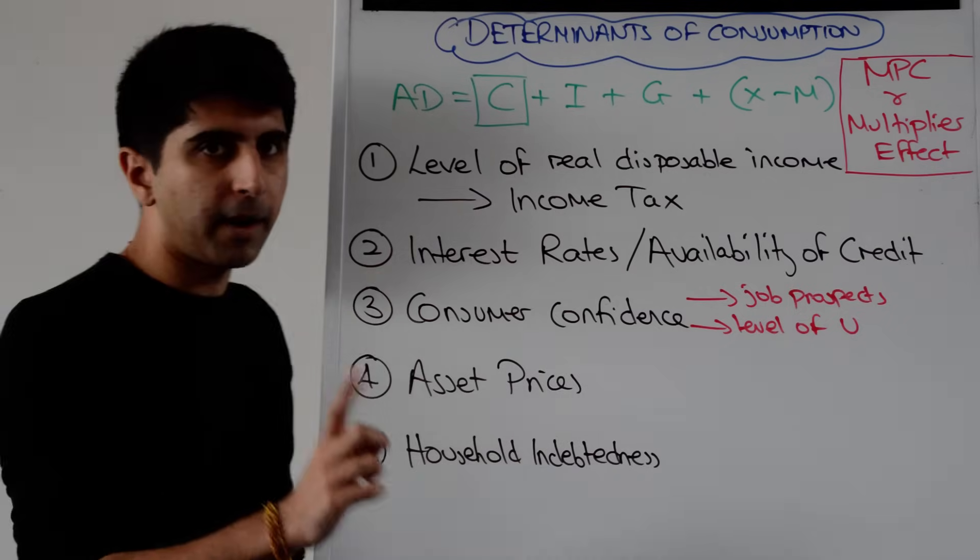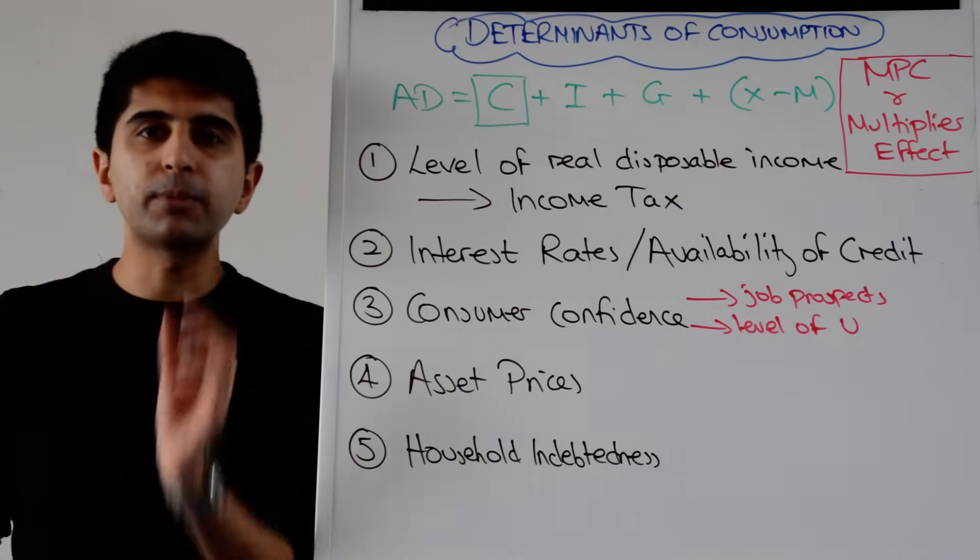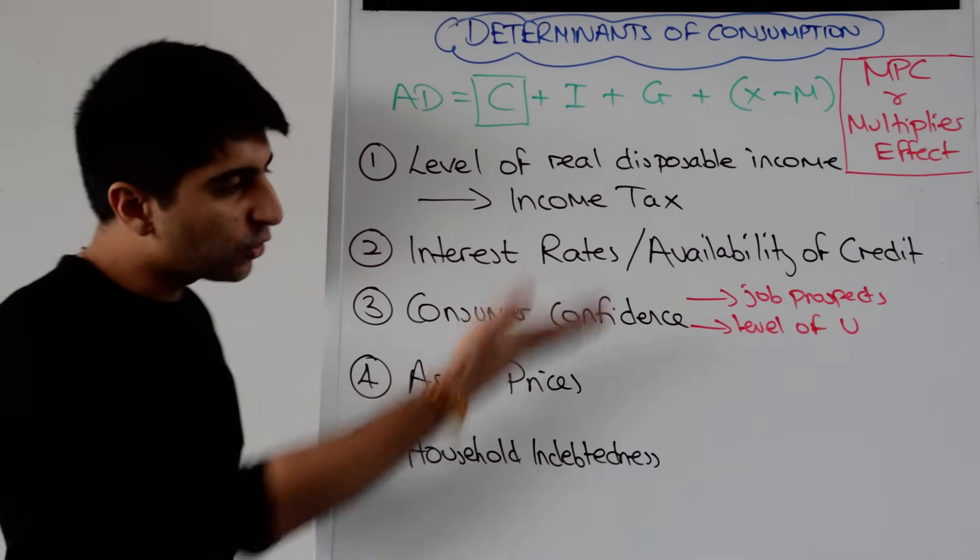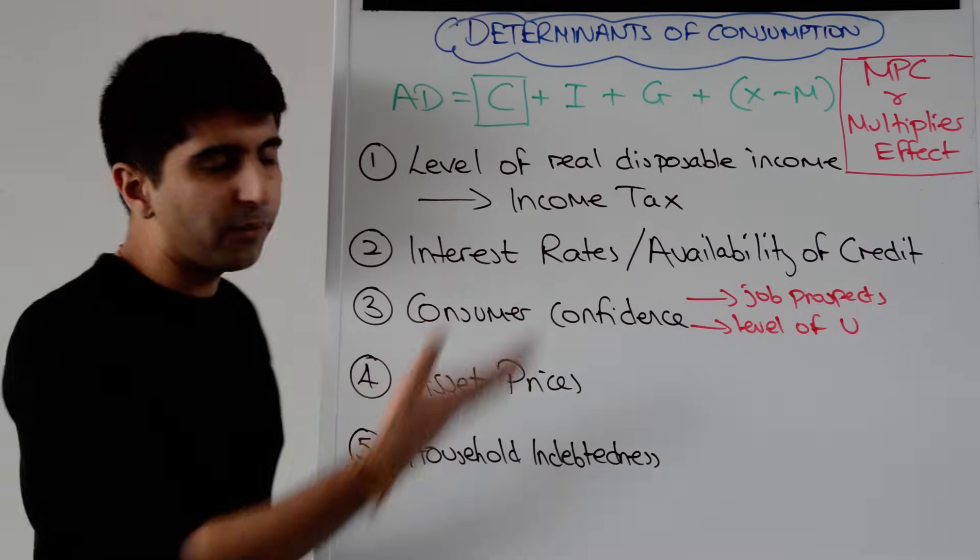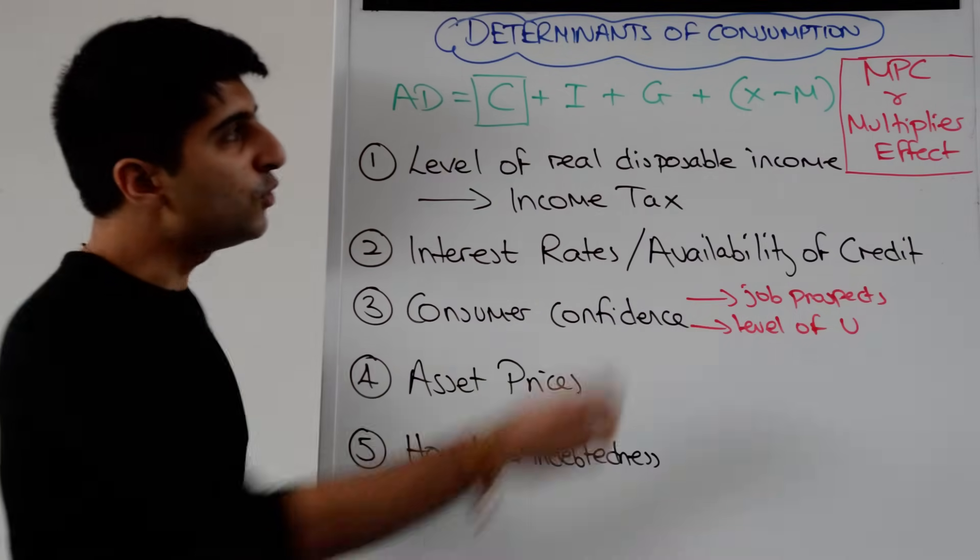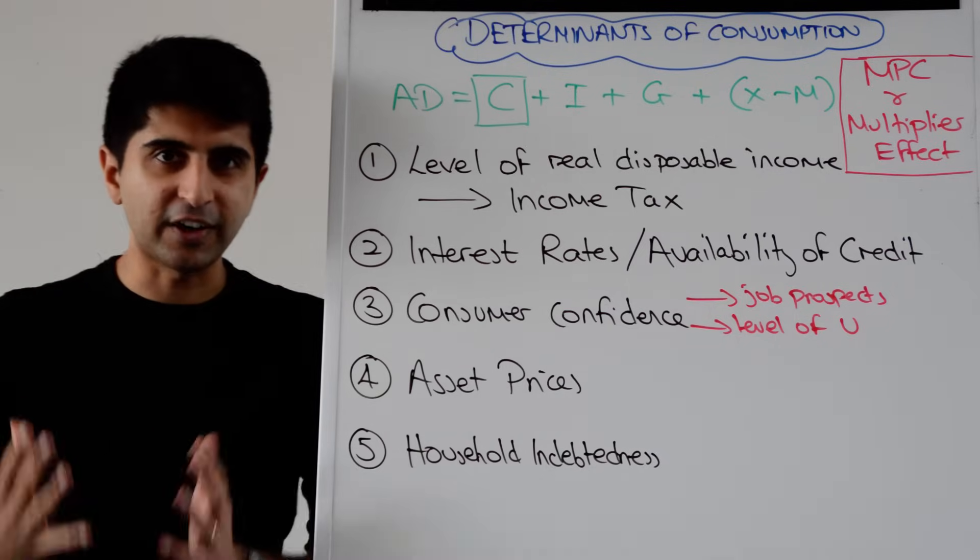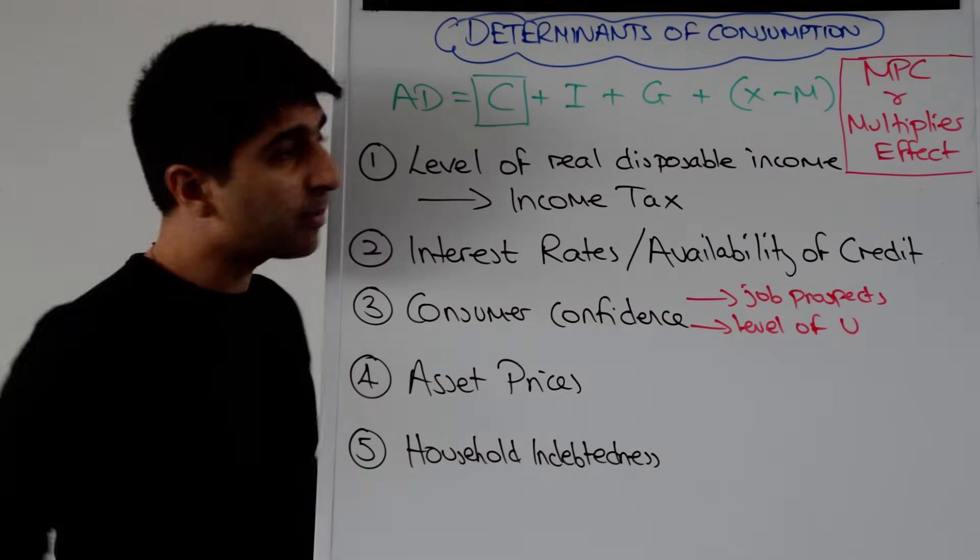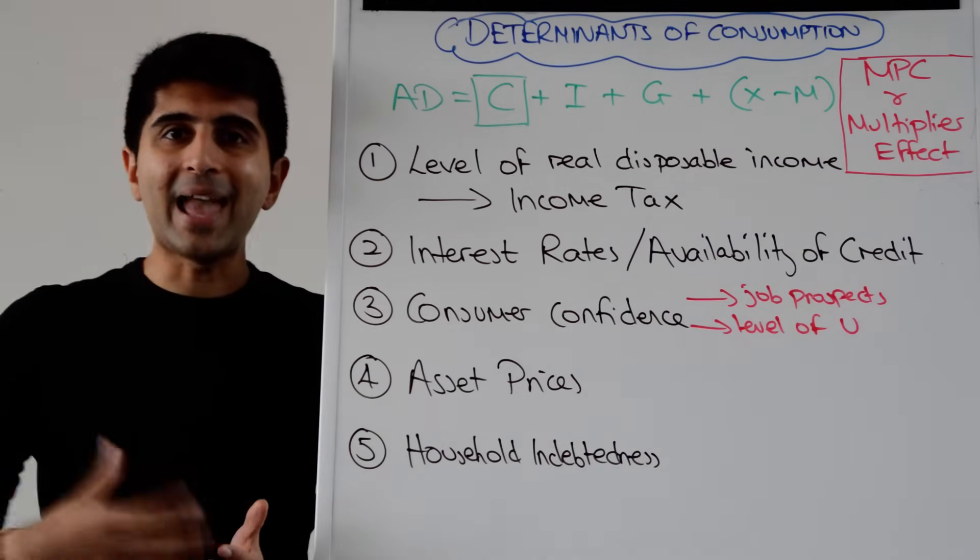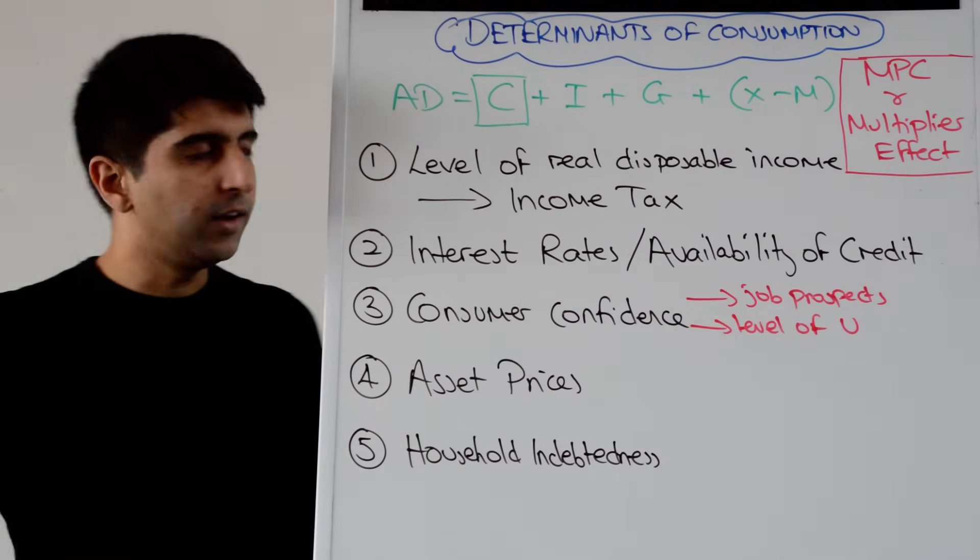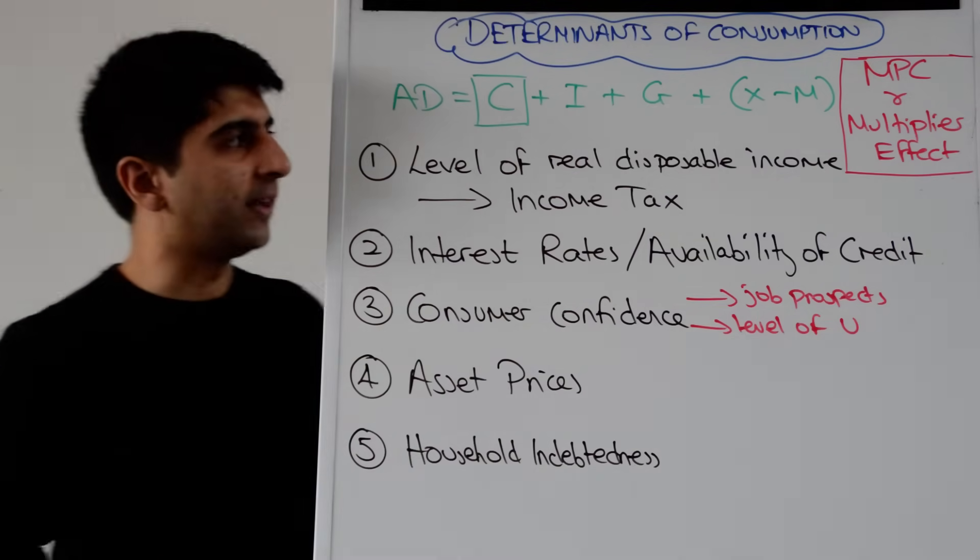Before we get started, something to bear in mind is to use the phrase the marginal propensity to consume in your chains of analysis here. So when you're writing long paragraphs as to how these factors can influence C, using the marginal propensity to consume will make you look amazing and more professional in your writing. The marginal propensity to consume is just the willingness of a household to spend any extra income that they earn. So it's something that you can use throughout. I'll be using it, use it as I do basically.